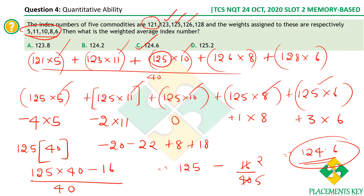For TCS NQT, I strongly recommend using the on-screen calculator. But this deviation method is useful in other exams: convert everything to a central value, compute small deviations, sum them, and divide by total weights. It avoids computing large products like 121×5 or 123×11 directly.